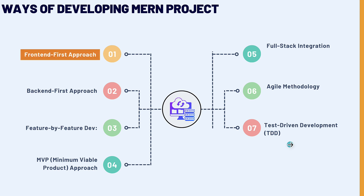Let's begin with the front-end first approach. We start with the React front-end to create the user interface, building out the UI components and views first without worrying about the backend. We use mock data or static JSON to simulate backend data. This is useful for projects where user experience and interface design are critical. Once the front-end is visually and functionally complete, we develop the backend and database to support it.